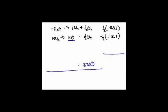And so I simply add these numbers up. We get positive 155.65. How could you get 0.65? Because you divided some of those numbers by two. That's going to give us some extra decimal places. So from a sig fig point of view, it's probably 155.7 kilojoules.